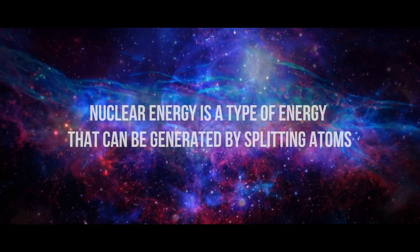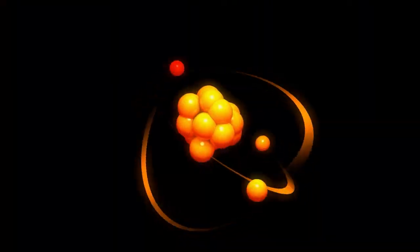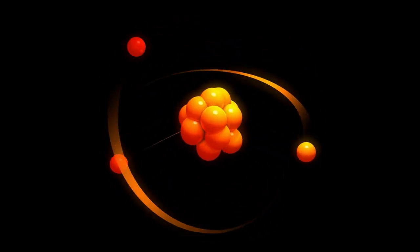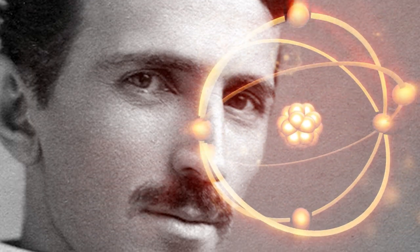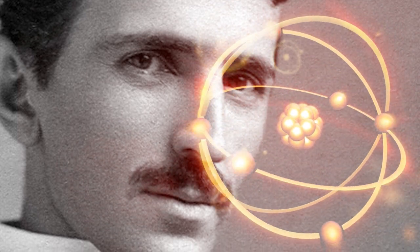Nuclear energy is a type of energy that can be generated by splitting atoms. Of course, his lack of belief in electrons led him to believe that atoms could not be divided. In the early 1930s, Tesla expressed his opinion to the New York Times that the idea of atomic energy was illusory, but had taken such a hold on minds that, despite his preaching against it for 25 years, there were still people who believe it is feasible.